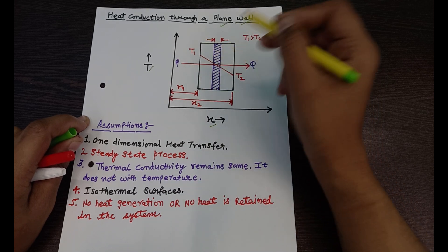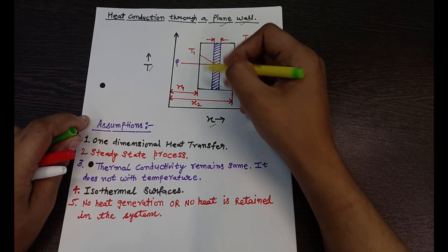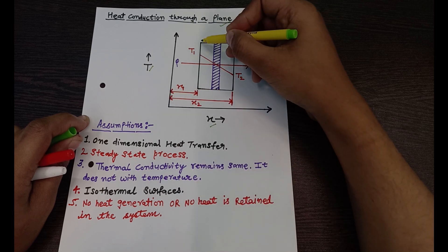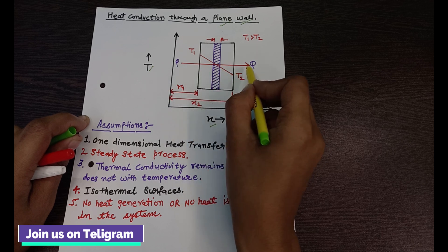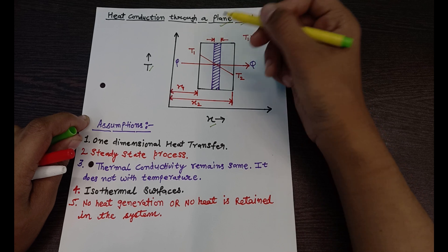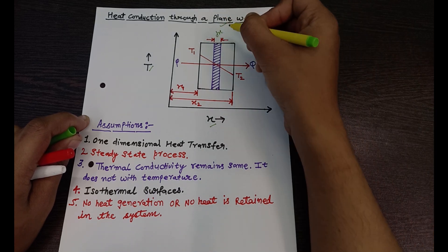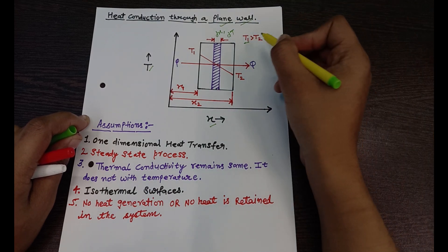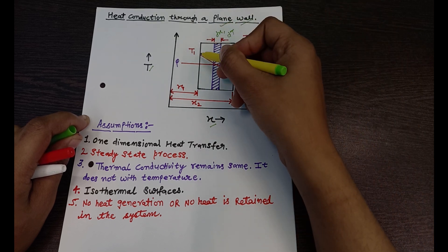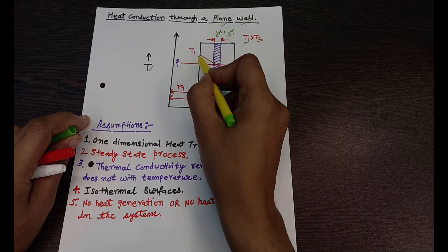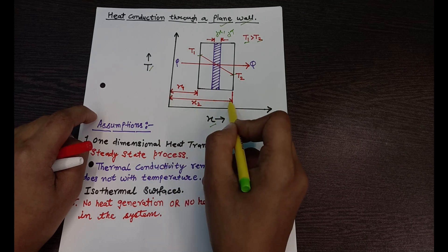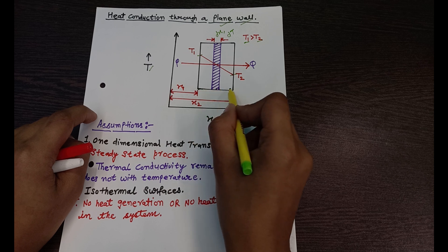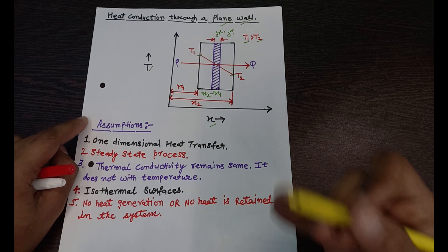The wall is shown in this x-y plane. The temperature of the left surface is T1 and the temperature of the right surface is T2, with heat transferring from T1 to T2 in the direction parallel to the x-axis. I am taking a strip of thickness DX with a temperature difference DT. T1 is greater than T2. The distance from the y-axis to the left face is x1 and to the right face is x2, so the wall thickness is x2 minus x1.